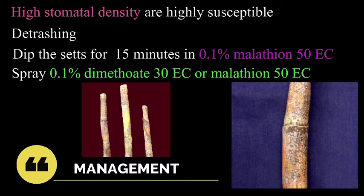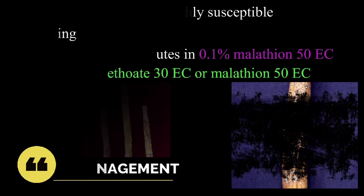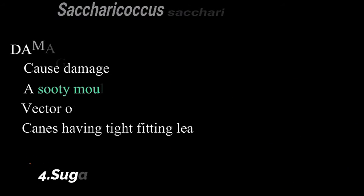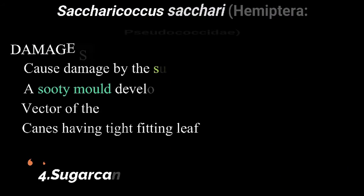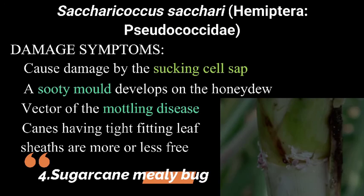Dip the seeds for 15 minutes in 0.1 percentage malathion 50 EC before planting. Spray 0.1 percentage dimethoate 30 EC or malathion 50 EC after detrashing.